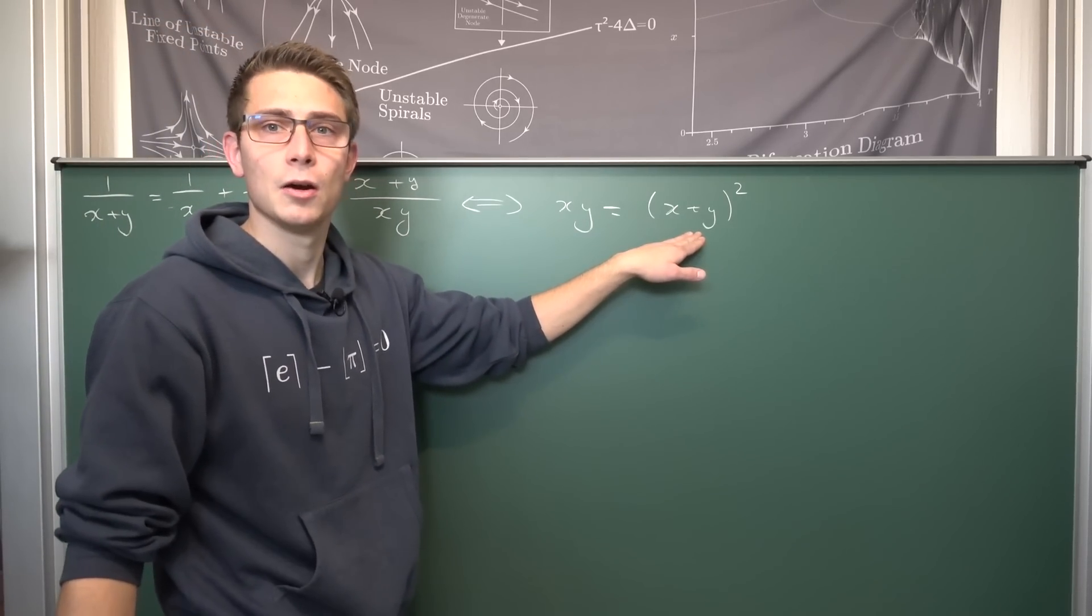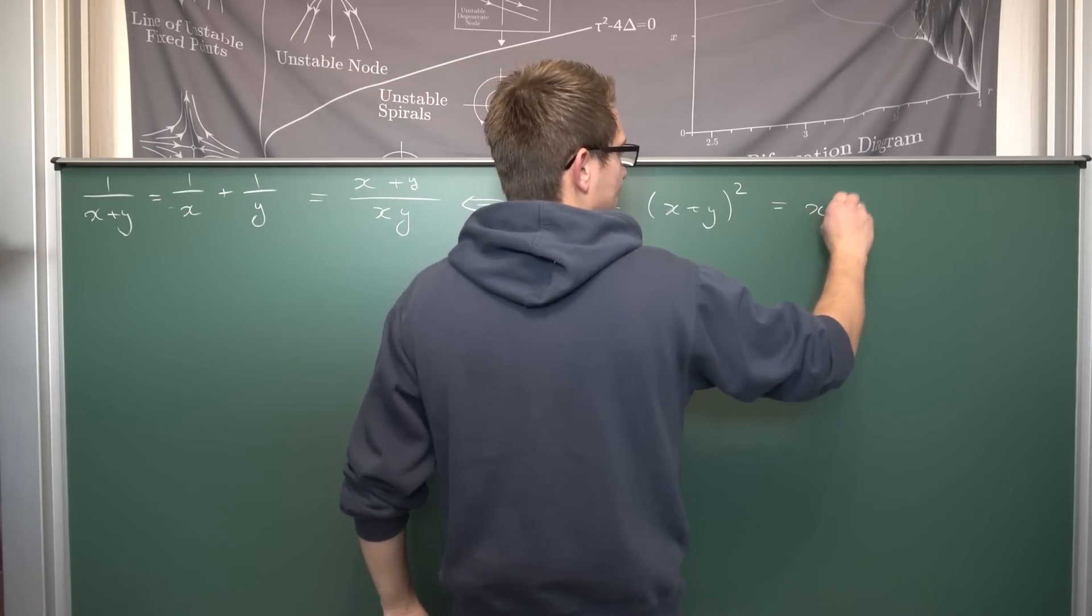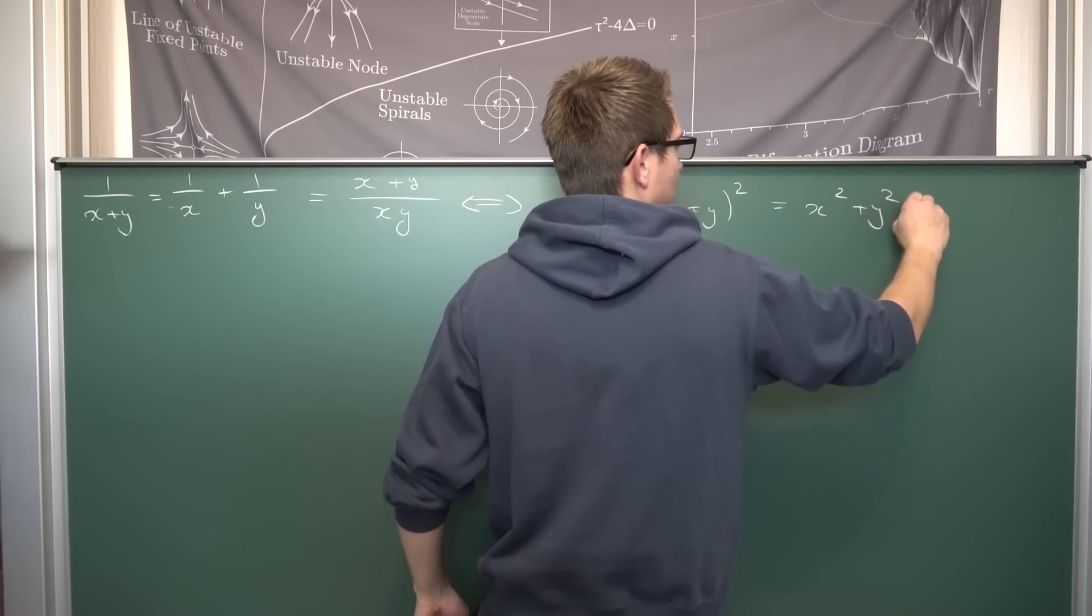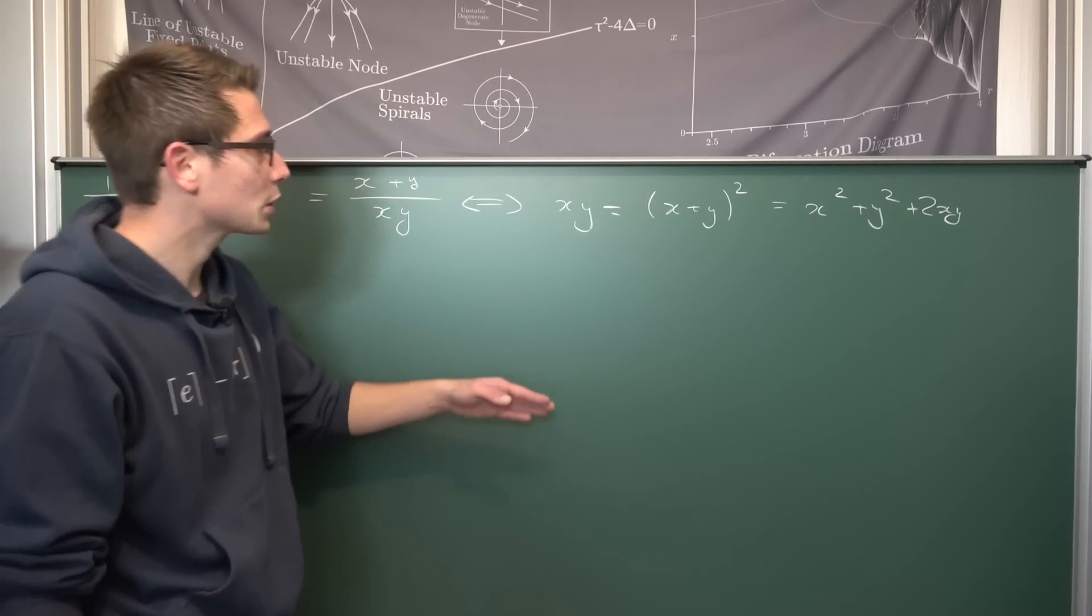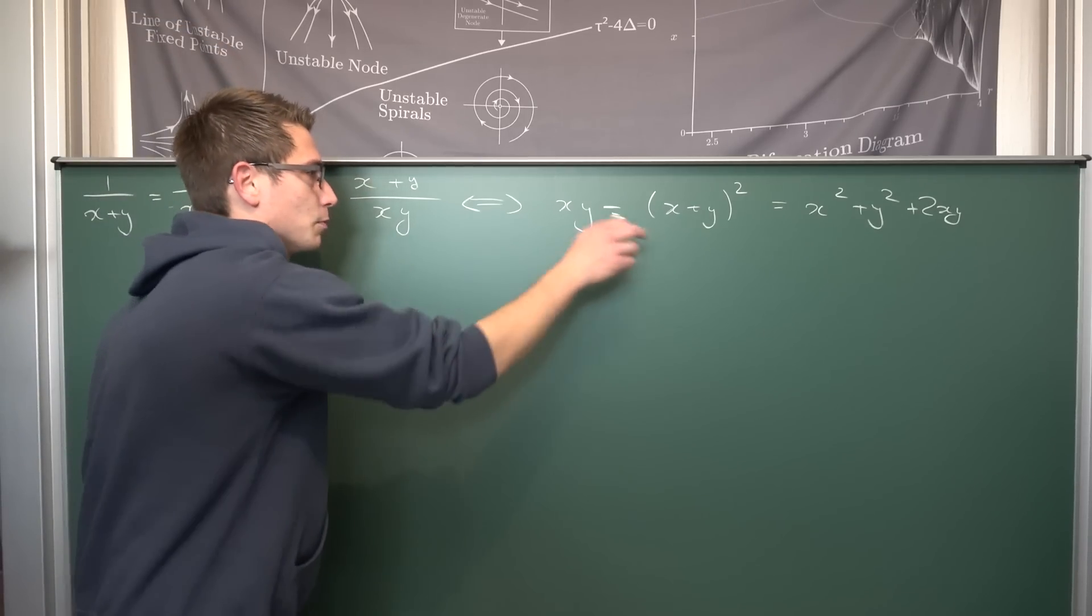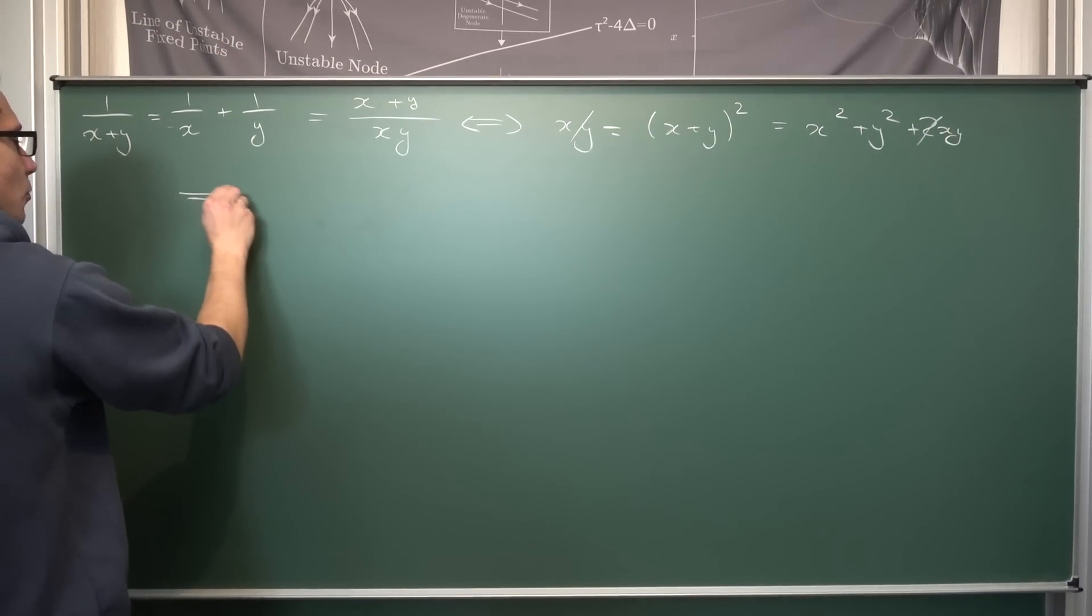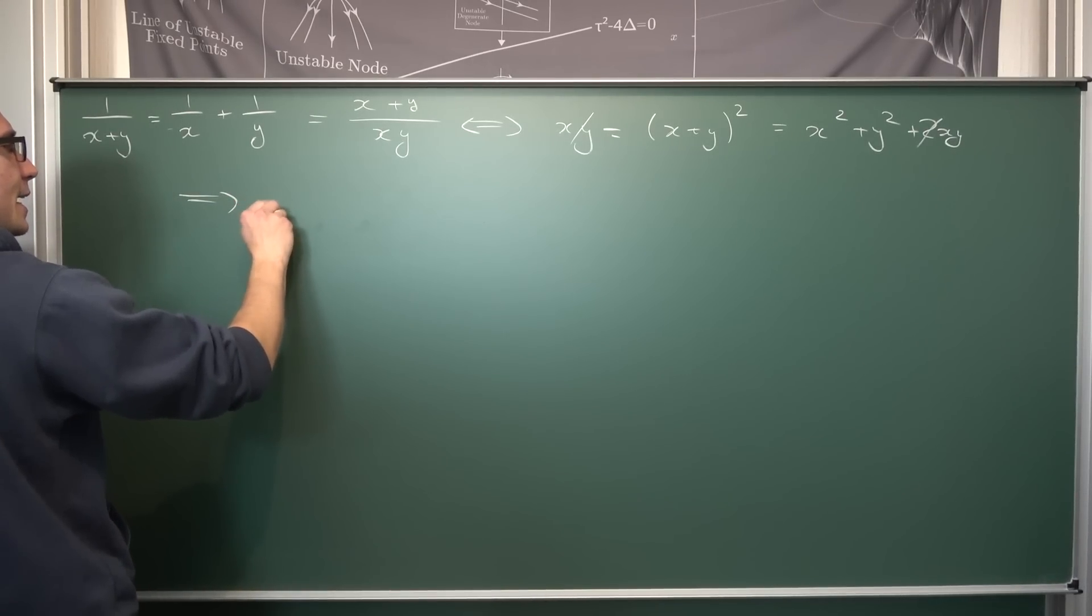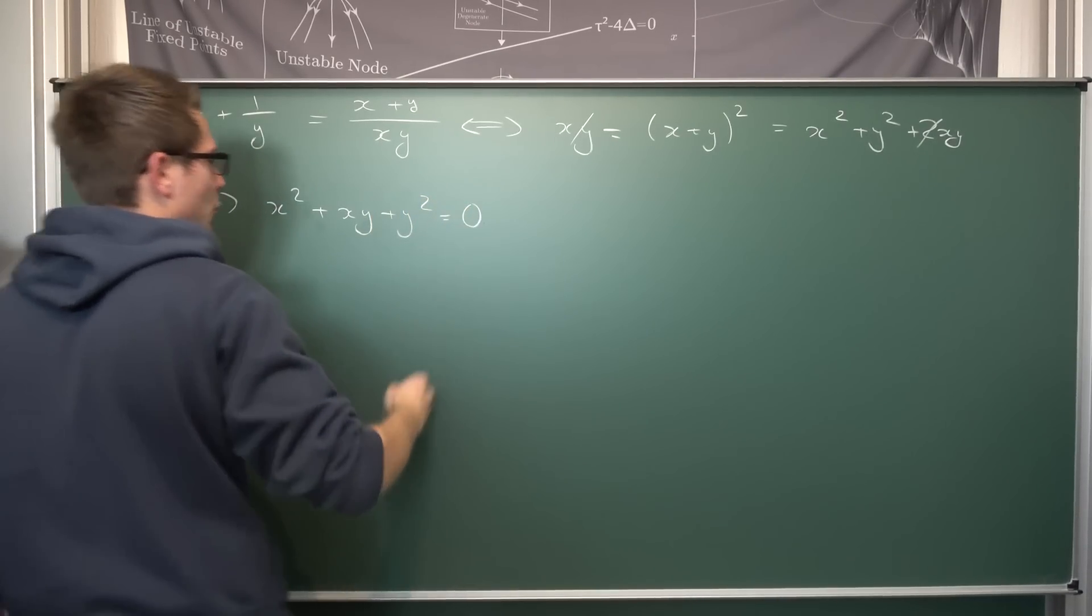Okay, thus far thus good. How can we proceed from here? Well, obviously by expanding what we got here. So by using the binomial theorem we are going to get x squared plus y squared plus 2xy. And now this right here is very tame overall. What we can do now is subtract xy on both sides getting rid of 1xy on this side. Giving us overall the new equation that x squared plus xy plus y squared is equal to 0.